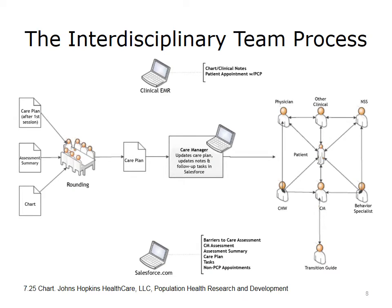The interdisciplinary team process is important, because when there's an assessment summary and a care plan, it's important for the team to do a process called rounding. Using these documents — the medical record, the assessment summary, the care plan — the team will sit down once a week with or without the patient, based on the patient's preference, and talk about the care plan, what interventions should be included, and what goals are appropriate.